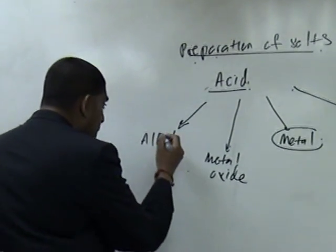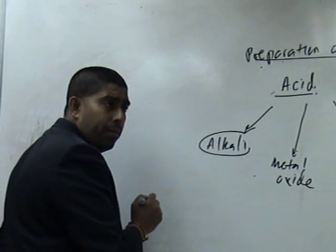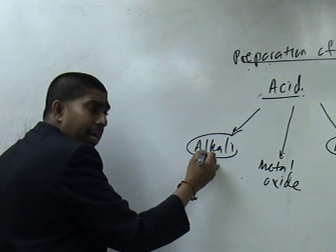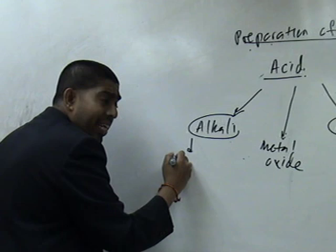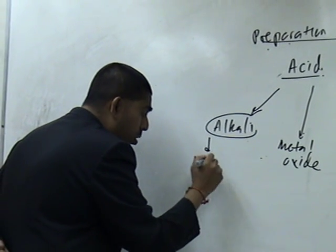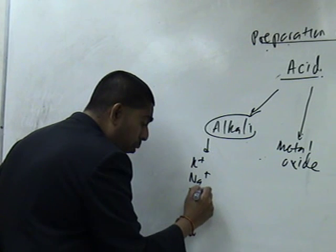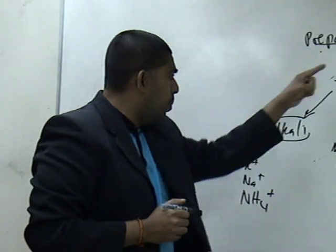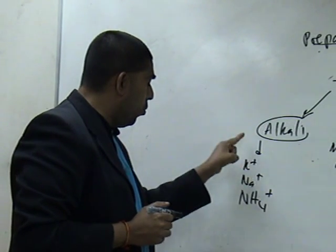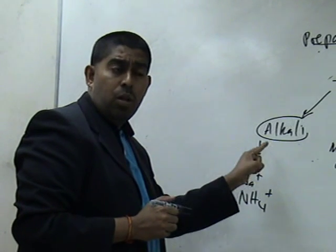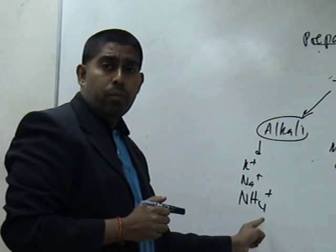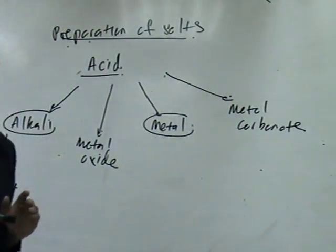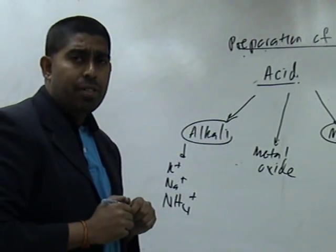And another point here, students. Acid and Alkali. This method can be used to prepare only three types of salts. Potassium salt, sodium salt, and ammonium salt. Remember, students. I repeat myself again. Acid plus Alkali can only be used to prepare these three types of salts. Potassium, sodium, and ammonium. Not other. So, to prepare all the other salts, you can use any of this method. Can you see? Acid plus Alkali. I must tell you that.